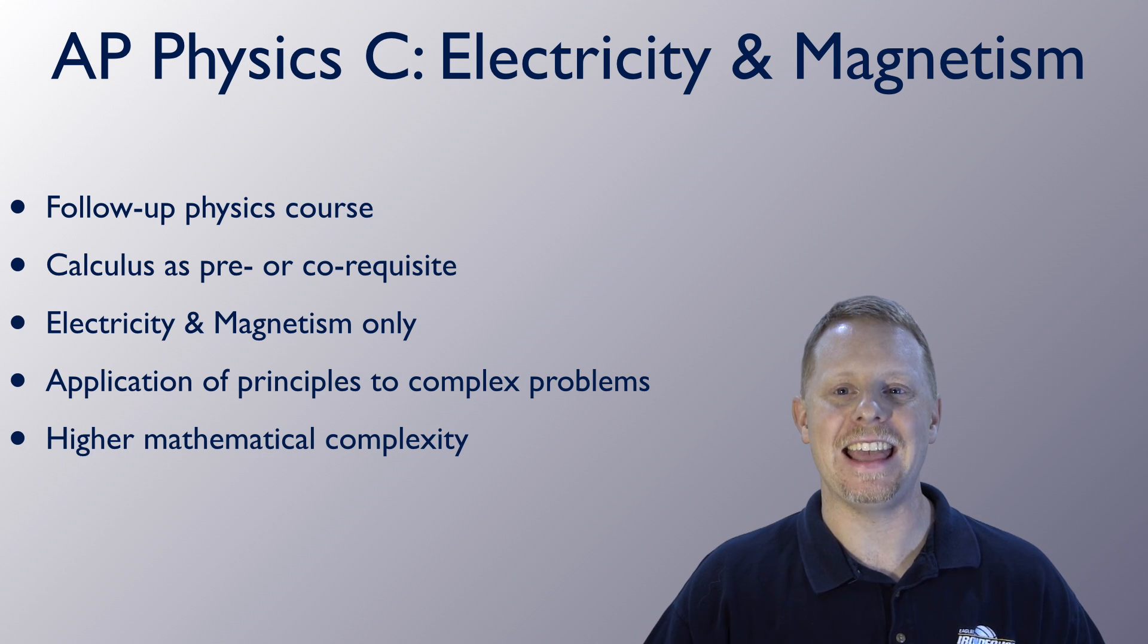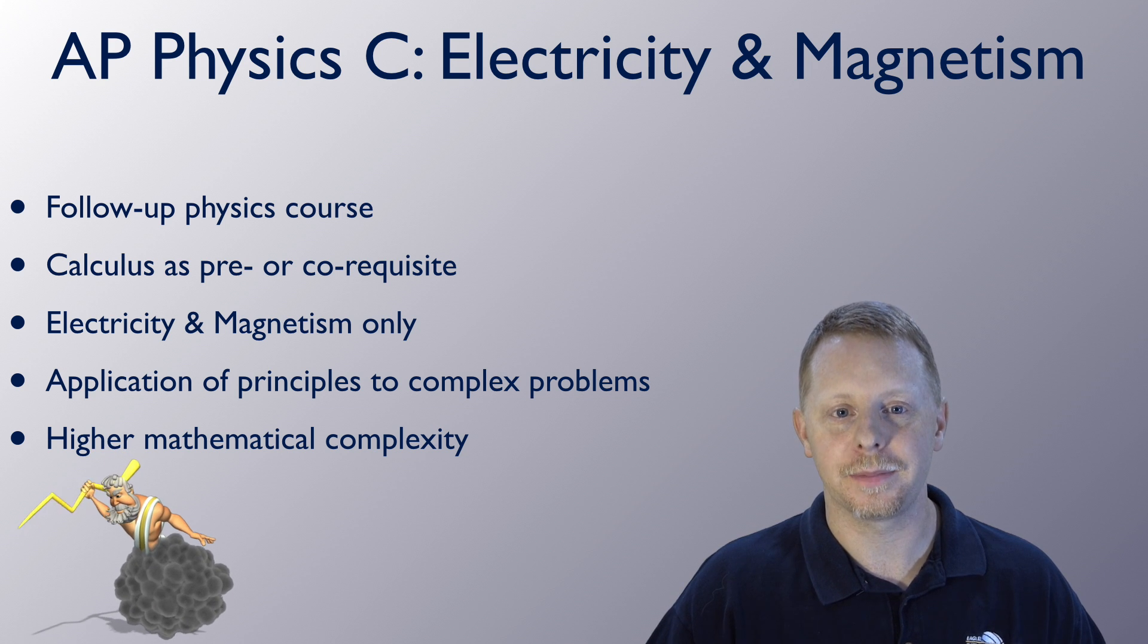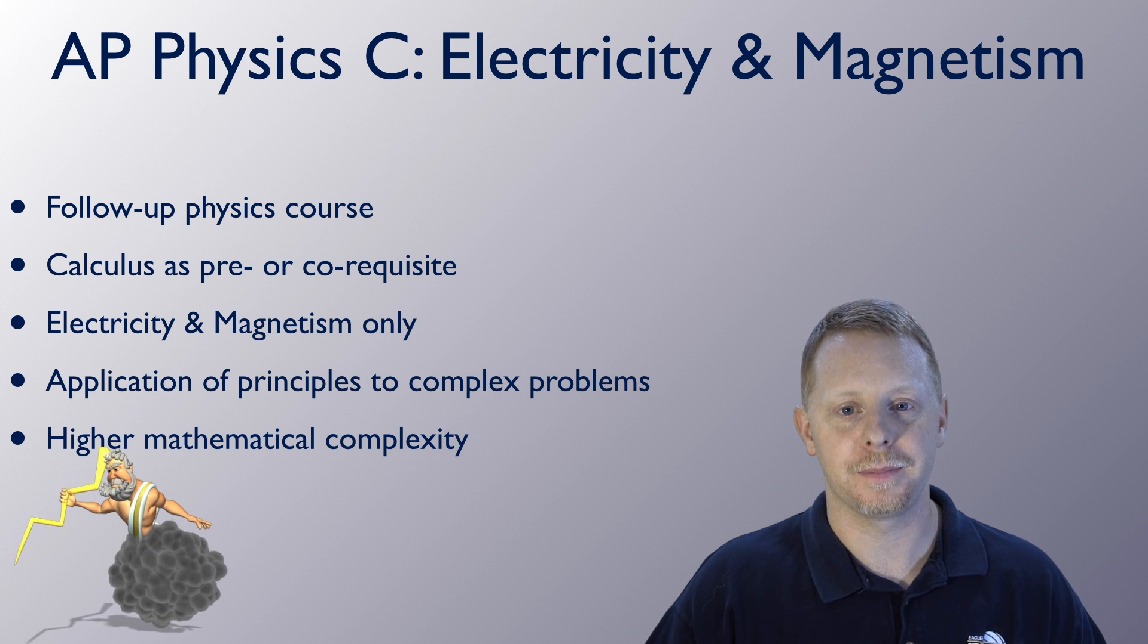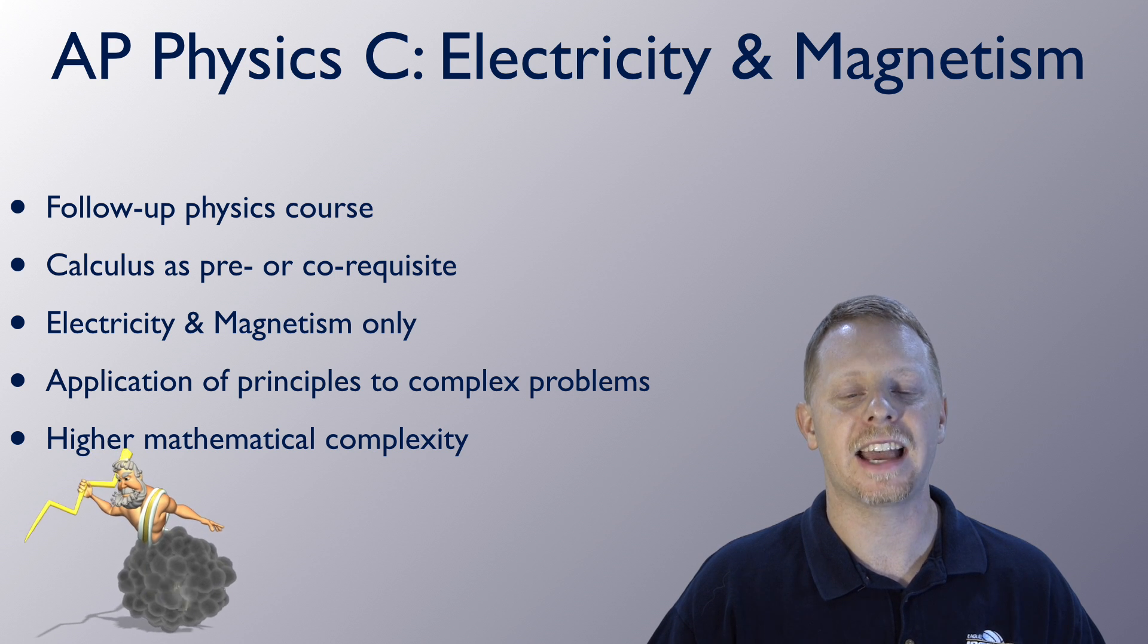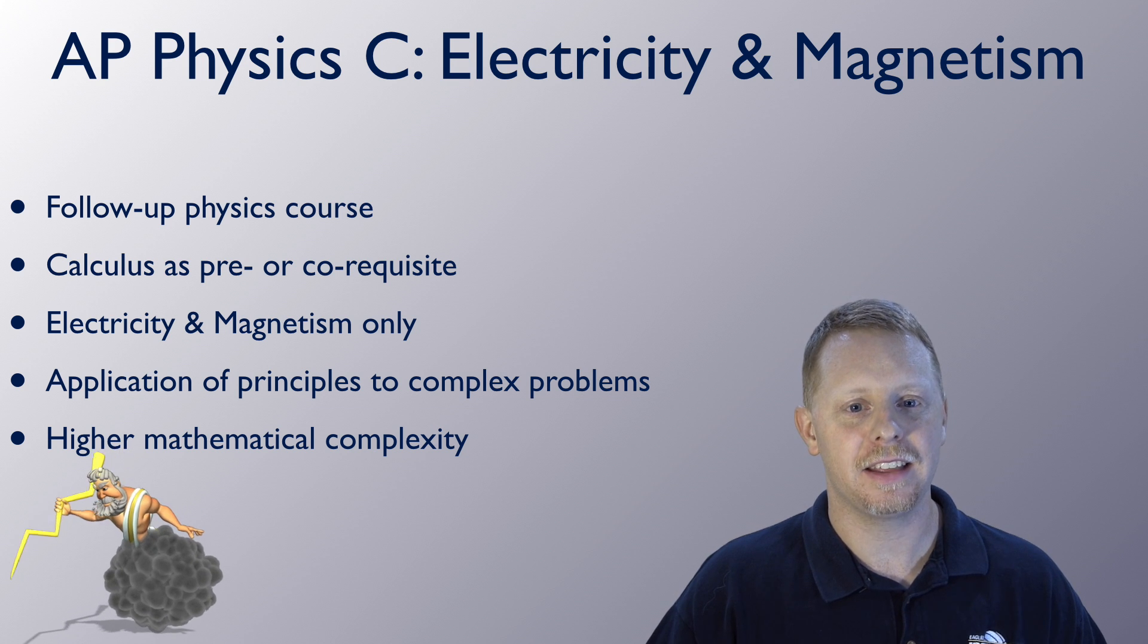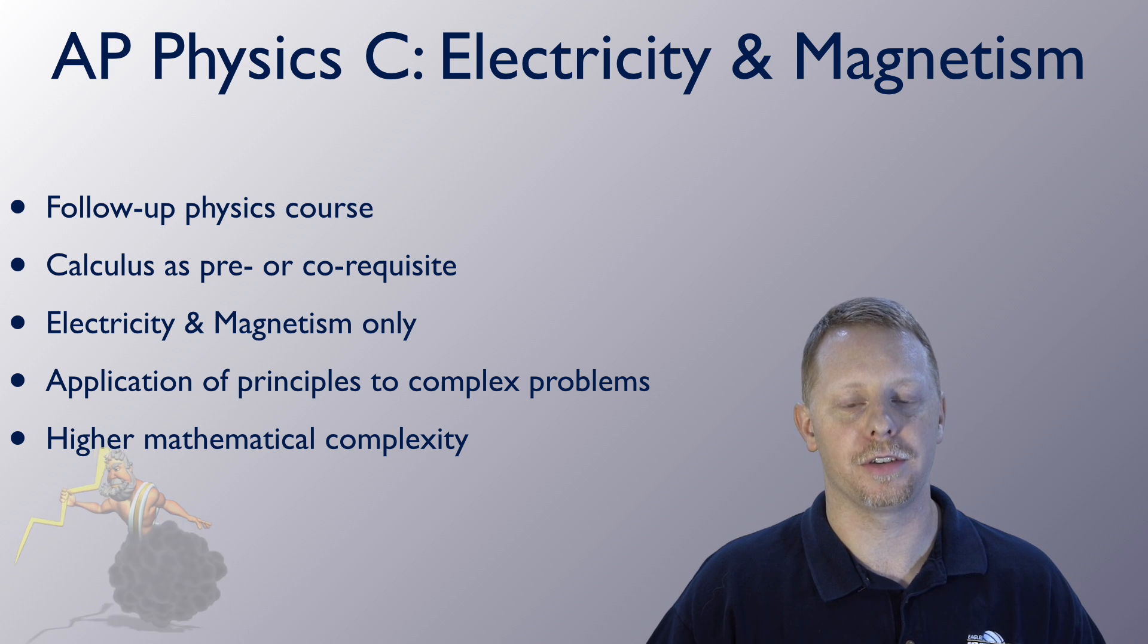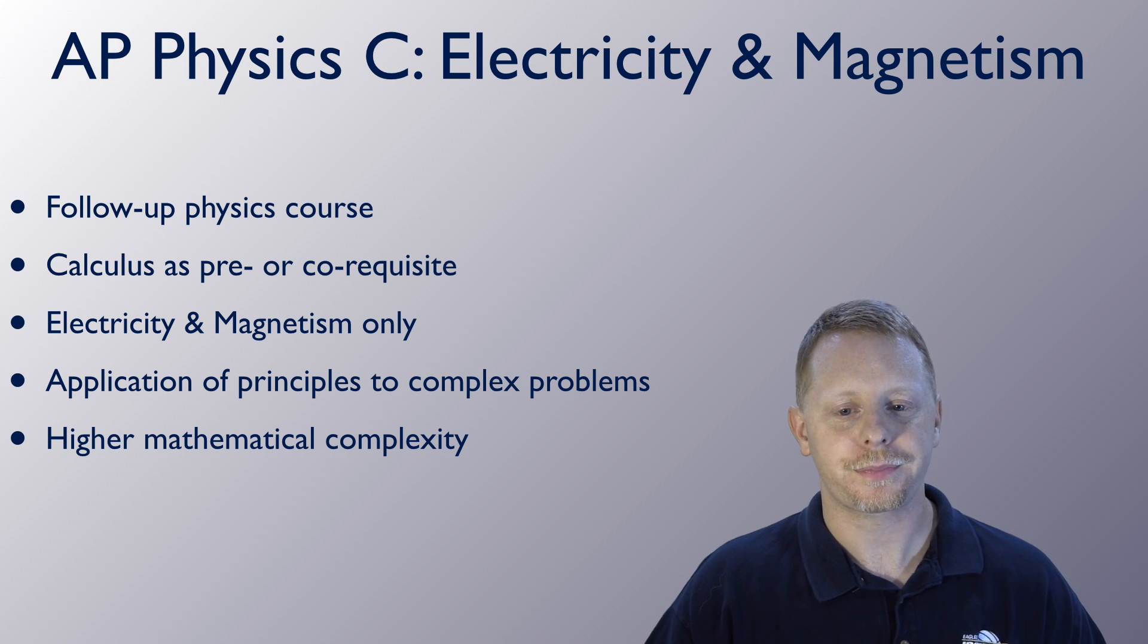AP Physics C E and M along the same lines does the same thing. It goes into considerable depth with calculus and math on the electricity and magnetism side. You'll talk about electrostatics. You'll talk about circuits. You'll talk about magnetism. You'll talk about electromagnetism. And that's the entire course. It's a very complicated course from a technical standpoint for high school students, but certainly doable. Really, you're focusing on Maxwell's equations as you go through the course. And at the end of the course, you should have a pretty good understanding of the four Maxwell equations that you use throughout the course.